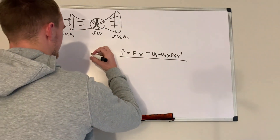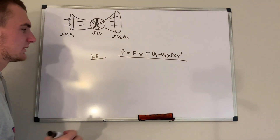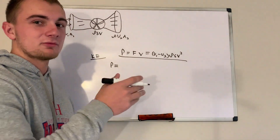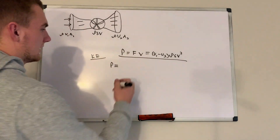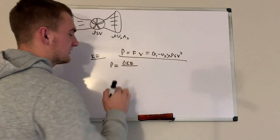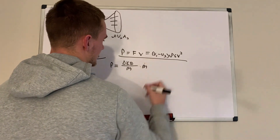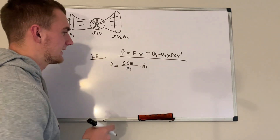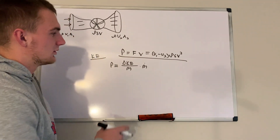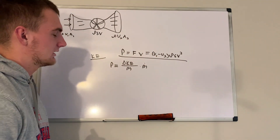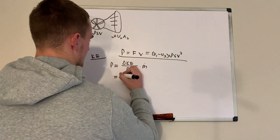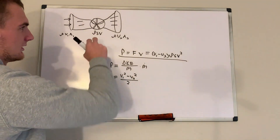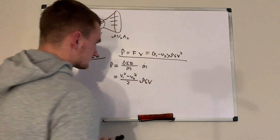Now let's look at the kinetic energy balance. We can also think of this in terms of power: the net change in kinetic energy per unit mass multiplied by the mass flow rate gives our power. Delta KE per unit mass — since kinetic energy is one-half m·v², per unit mass the m's cancel — gives us (v1² − v2²)/2, multiplied by rho·S·v.